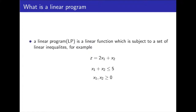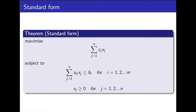A linear program is a linear function which is subject to a set of linear inequalities. In the example shown, the linear function is z equals 2x1 plus x2. The linear inequalities are x1 plus x2 less than or equal to 5. Given a linear program, we convert first to standard form and then to slack form.